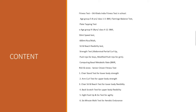Computing Basal Metabolic Rate BMI. Rikli & Jones Senior Citizen Fitness Test: 1. Chair Stand Test for Lower Body Strength, 2. Arm Curl Test for Upper Body Strength, 3. Chair Sit and Reach Test for Lower Body Flexibility, 4. Back Scratch Test for Upper Body Flexibility, 5. 8 Foot Up and Go Test for Agility, 6. 6 Minute Walk Test for Aerobic Endurance.